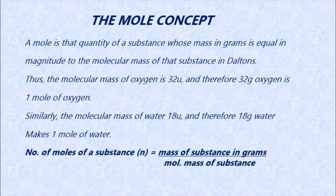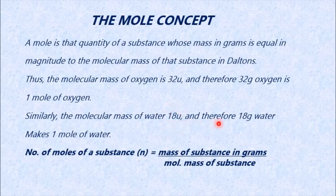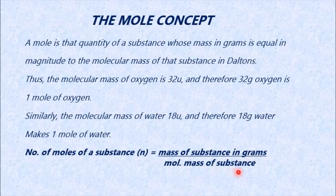A mole is that quantity of a substance whose mass in grams is equal to the magnitude of the molecular mass of the substance in daltons. For example, the molecular mass of oxygen is 32 daltons, so 32 grams of oxygen is one mole of oxygen. Similarly, the molecular mass of water is 18 daltons, so 18 grams of water makes one mole of water. The formula is: number of moles (n) = mass of substance in grams ÷ molecular mass of the substance.